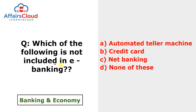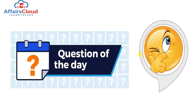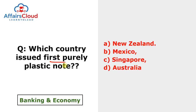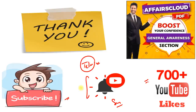Question of the day: Which of the following is not included in e-banking? Credit card, net banking, and ATM all work on the e-banking platform, so the answer is 'none of these' — D is the answer. The question of the day is: Which country issued the first purely plastic note? Tell me the answer in the comment box. Please like and share this video, subscribe this channel if you are new, and join our Telegram group from the description box link. Affairs Cloud will definitely boost your confidence in the general awareness section. Don't take life too seriously — life is fun! Always be happy. Thank you, take care, and bye bye.